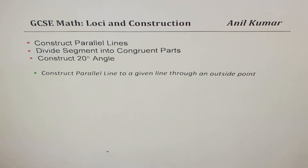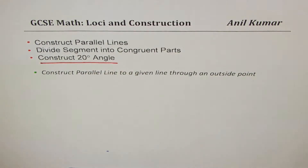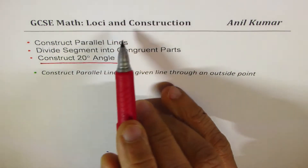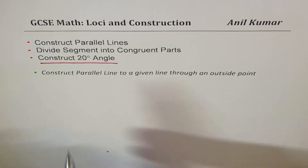I'm Anil Kumar. In this video we will see how to construct an angle of 20 degrees — that is the major objective. Now there are many shortcuts to do this, however when we learn analytical geometry and when we are talking about loci and construction, each step involved should be reasoned out. Our students should understand why the step has been done and how we get the result.